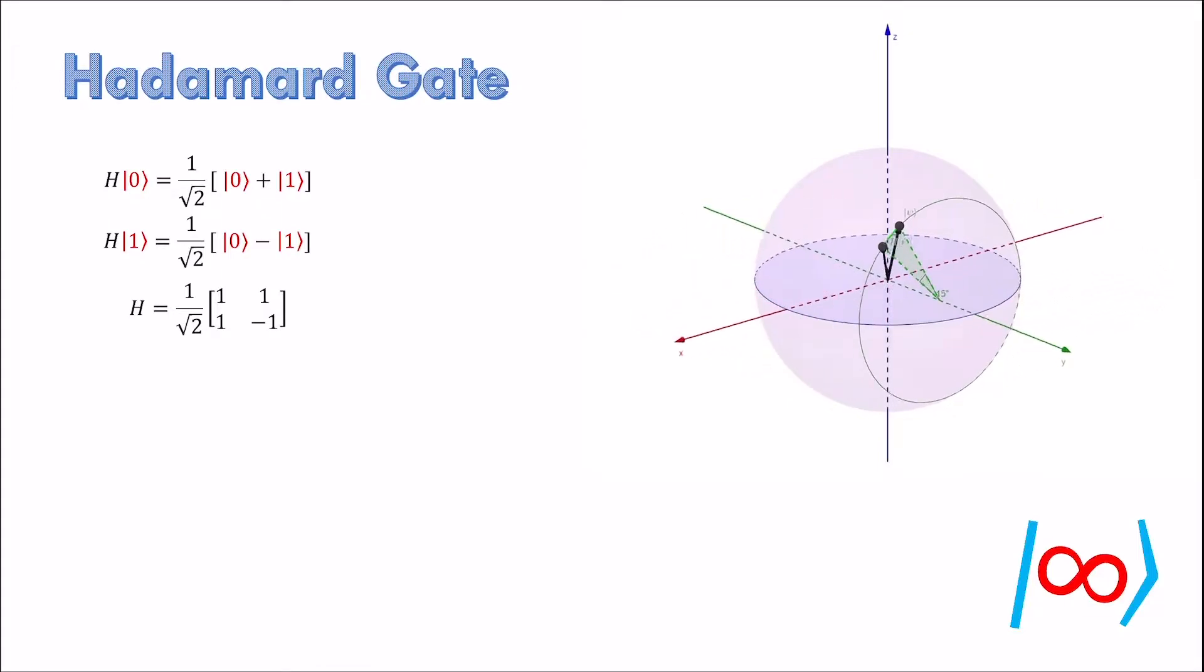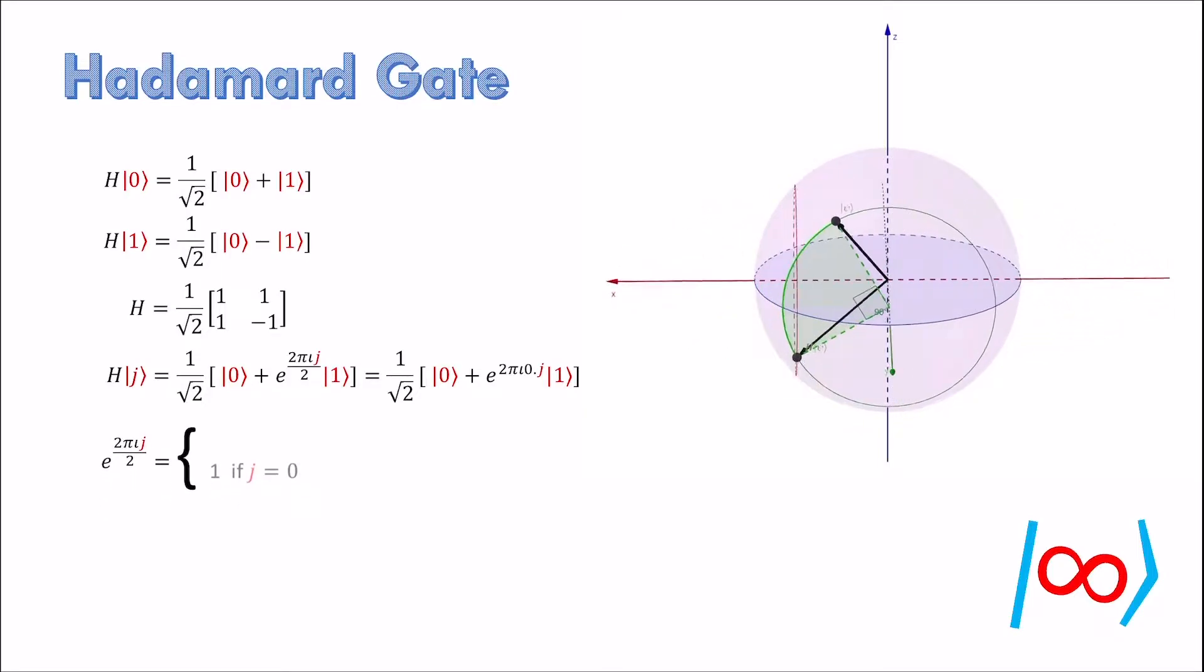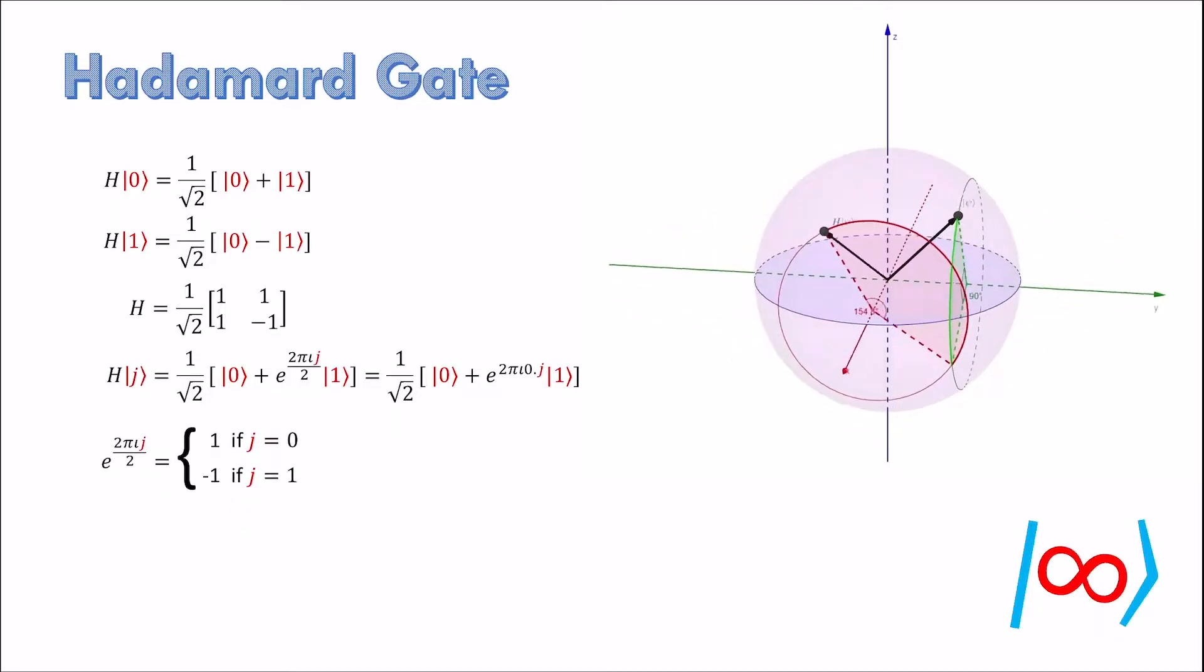As a matrix it can be represented as follows. It is useful to express the action of the Hadamard gate on a qubit in state j as follows. This is based on the following identity. In addition, we can write j by 2 as 0.j just like how we use decimal places in the case of division by 10.